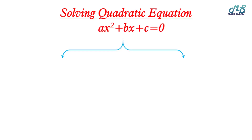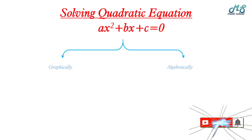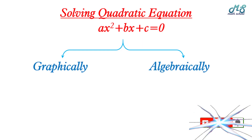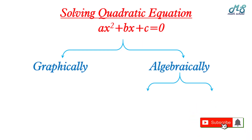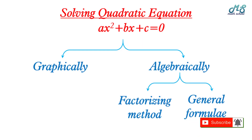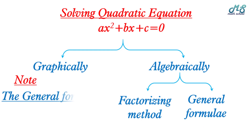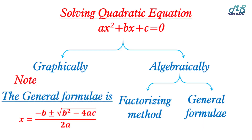For solving a quadratic equation ax squared plus bx plus c equals zero, we have two methods: graphically and algebraically. Algebraically, we can use factorizing and the general formula. Remember, the general formula is x equals negative b plus or minus the square root of b squared minus 4ac, all over 2a.